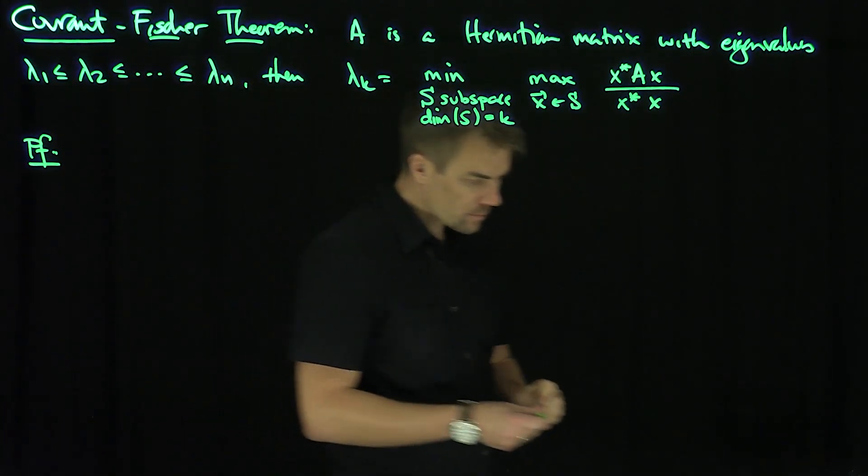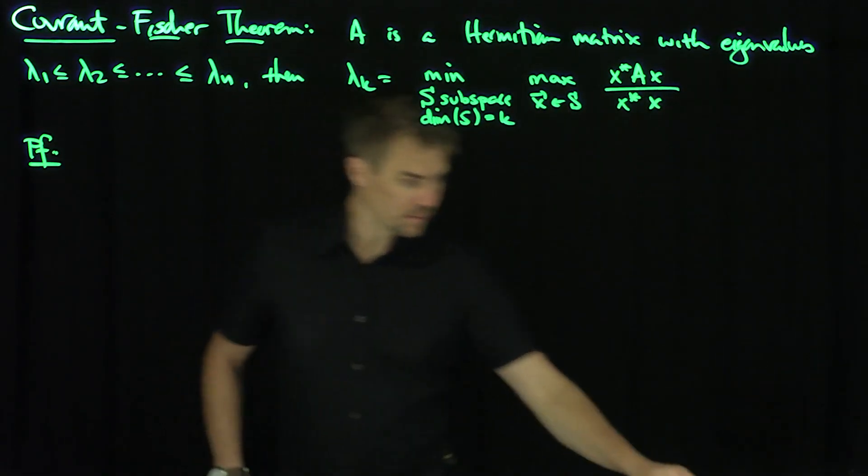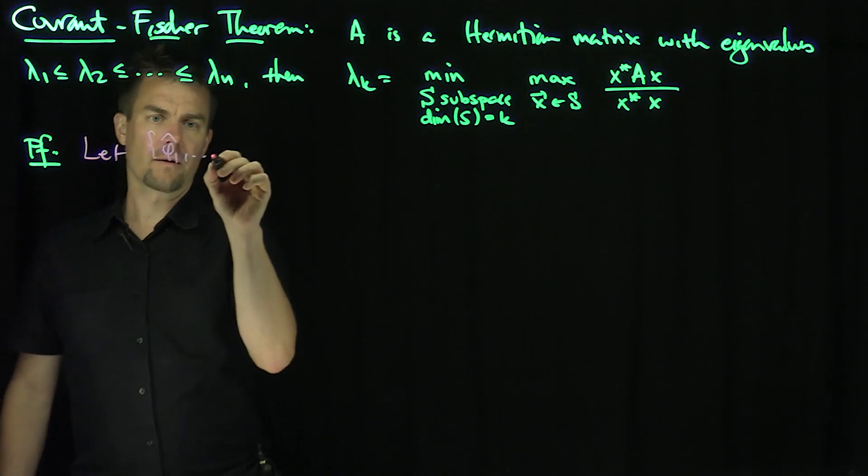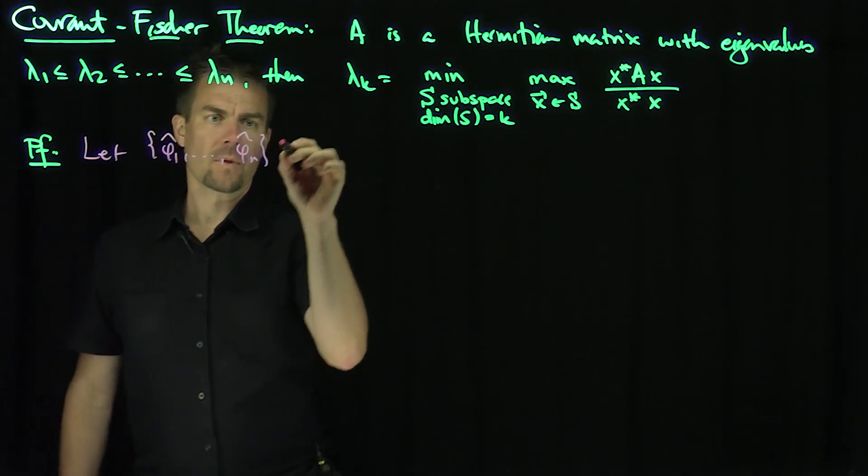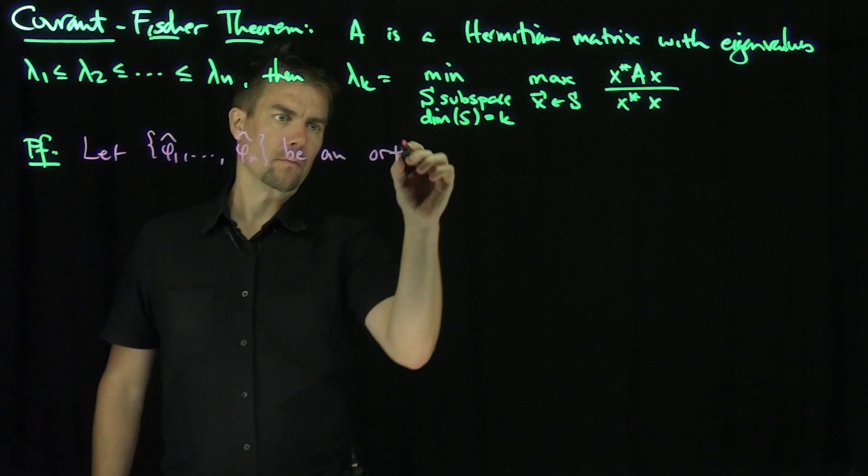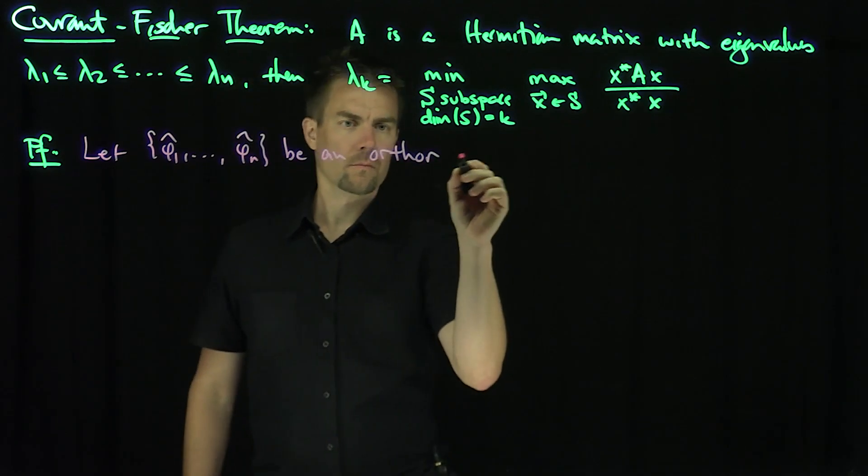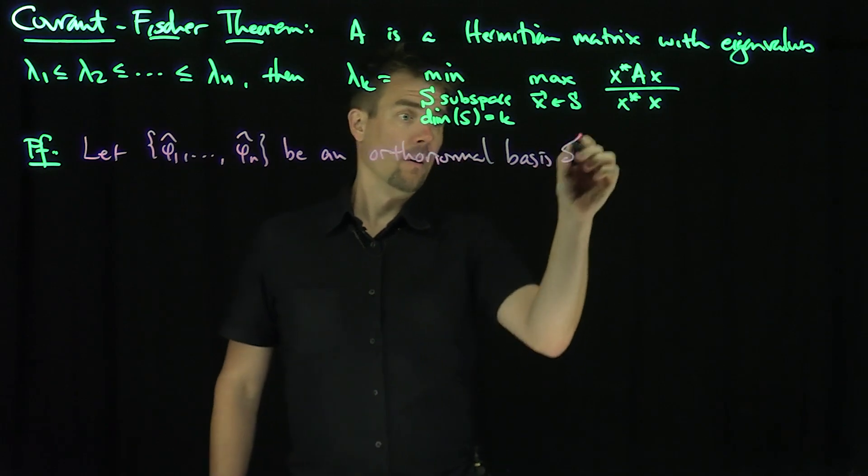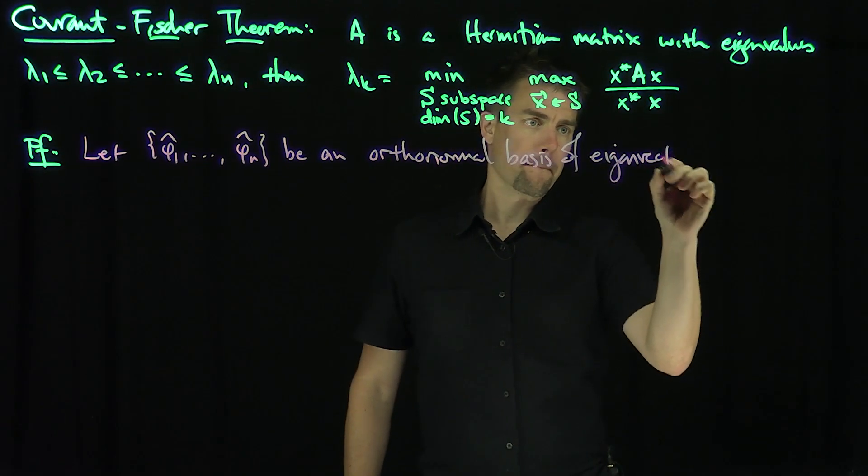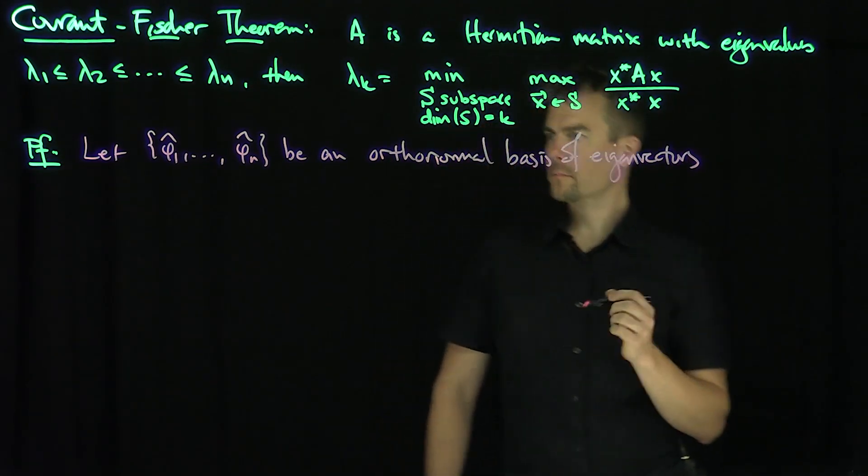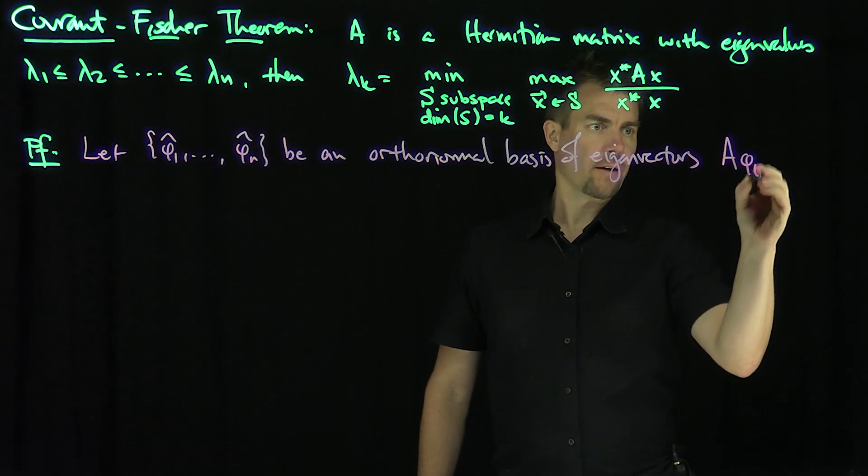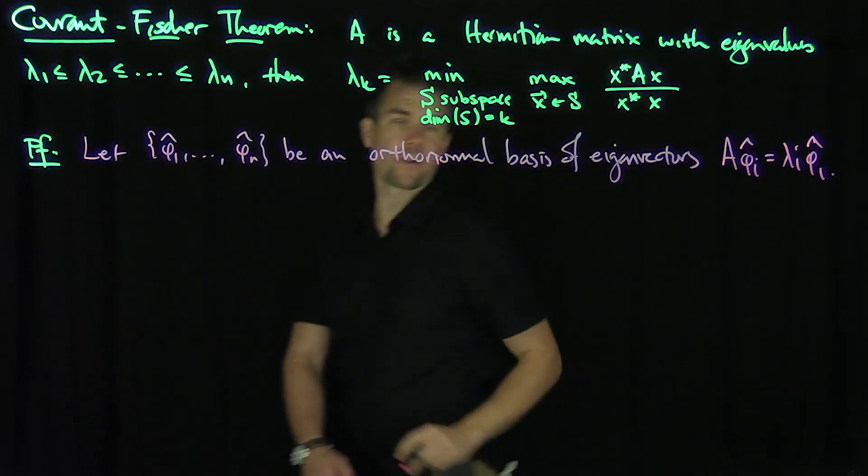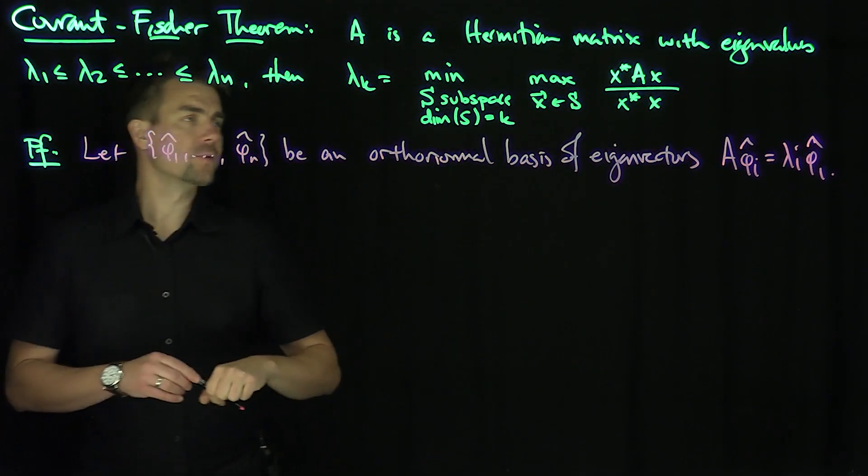So we're going to let φ₁ through φₙ be an orthonormal basis of eigenvectors such that A φᵢ = λᵢ φᵢ. And that follows from the spectral theorem. So now what I can do is the following.